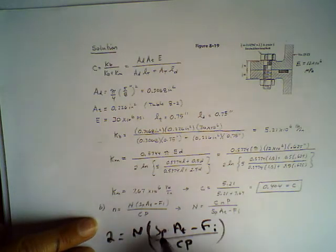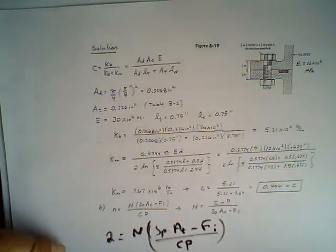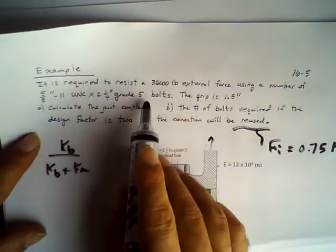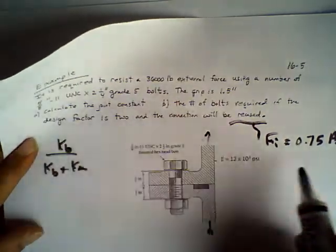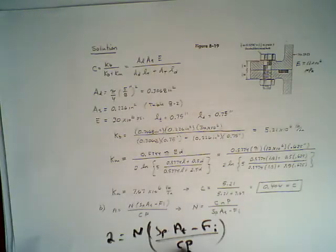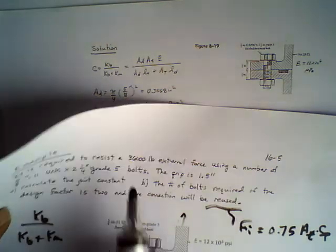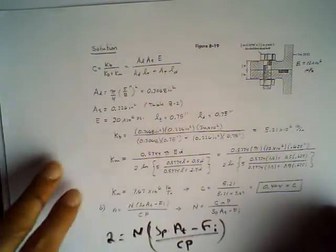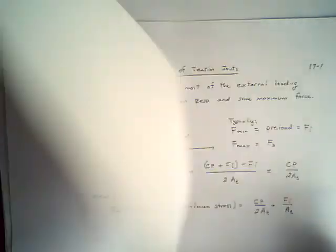How do I get Sp and At? I'm going to get this because I know the grade is 5, and I know my Fi based on this value, and I know my force P which is equal to 36,000. Now I can solve for n in a very nice and easy way.